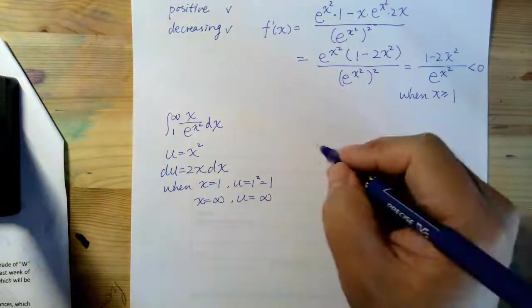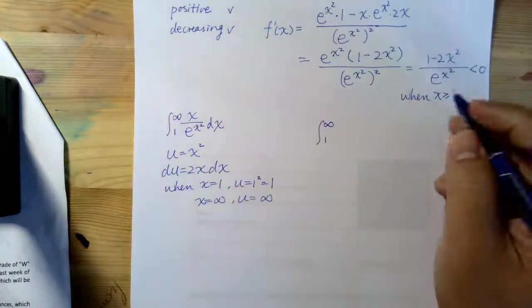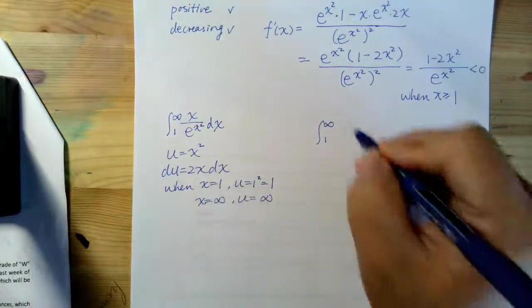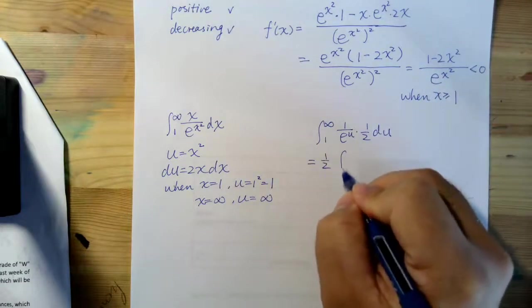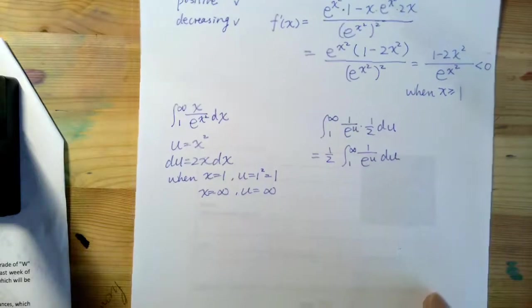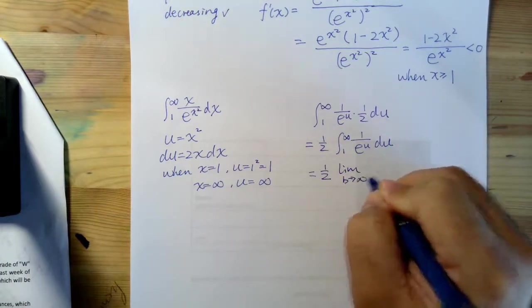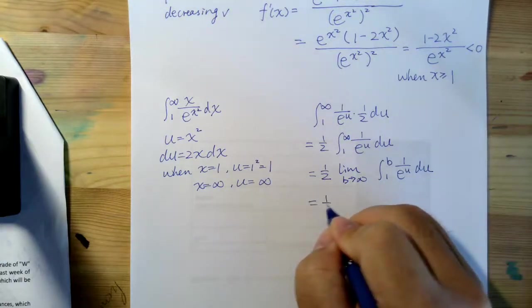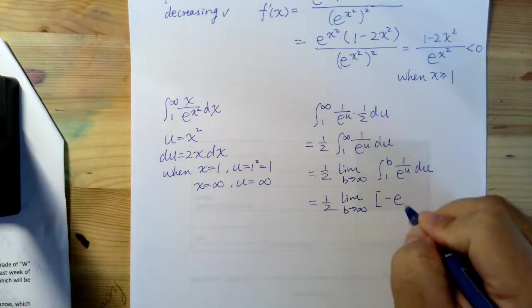So, with this we can evaluate our integral from 1 to infinity. x dx is going to be half of du, so it's going to be 1 over e to the power of u times half du, and that is half integral 1 over e to the u du. So to handle this integral it's pretty straightforward. Again, since this is an improper integral, we can do this, and it turns out this is going to be...